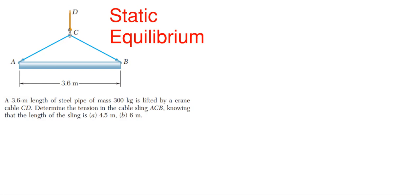So speaking of topics, what we're going to be covering here today is a static equilibrium problem. We have a 3.6 meter length steel pipe with a mass of 300 kilograms lifted by a crane cable CD. We need to determine the tension in the cable sling ACB, knowing that the length of this sling is 4.5 meters for the first part of the problem and then 6 meters for the second part.